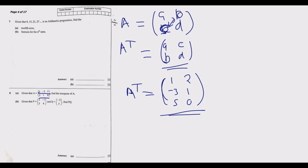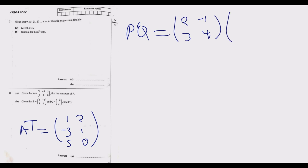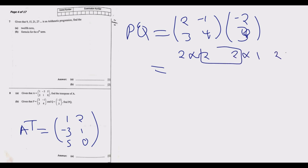Question 8b: given P is a 2 by 2 matrix with entries 2, negative 1, 3, 4 and Q is a column vector with entries negative 2 and 3, find PQ. We are multiplying a 2 by 2 matrix by a 2 by 1 matrix. The inner dimensions match, so the result will be a 2 by 1 matrix. The first entry: 2 times negative 2 equals negative 4.